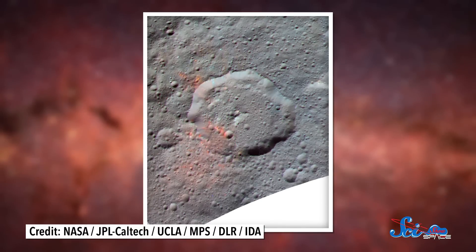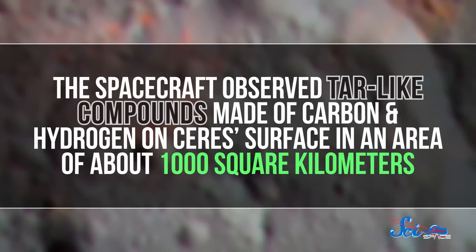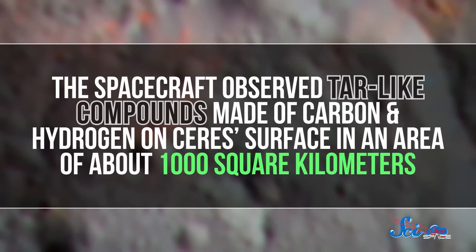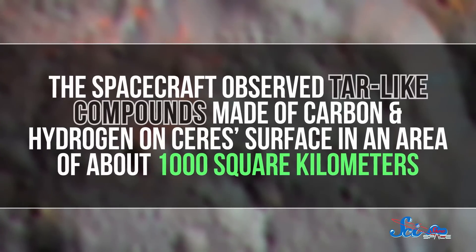But this February, Dawn found something that we didn't expect — organic molecules, which are the building blocks of life. Although it couldn't detect exactly what the molecules were, the spacecraft observed tar-like compounds made of carbon and hydrogen on Ceres' surface in an area of about a thousand square kilometers.